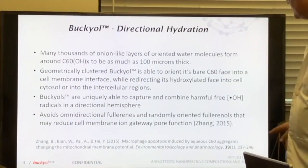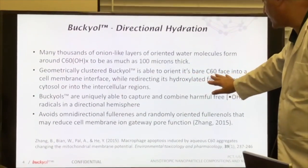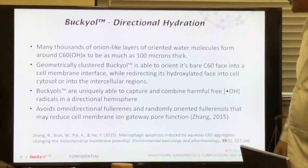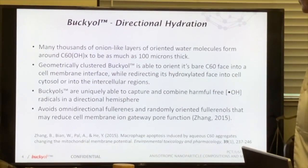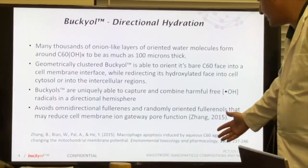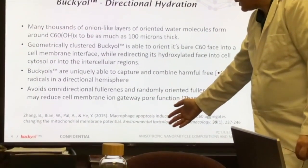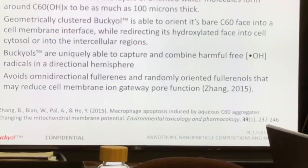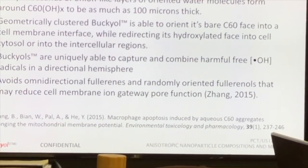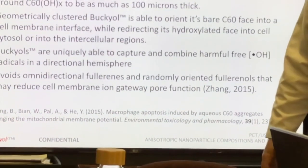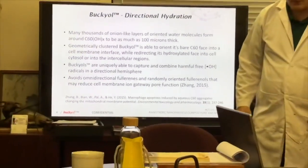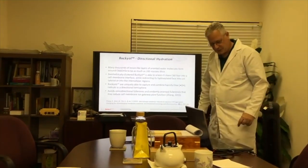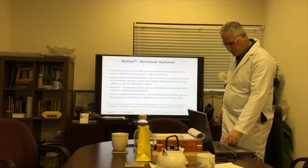We've already talked about the orientation ability of the C60 face onto the lipids. Here is a macrophage apoptosis that C60 has been known to trigger right at the mitochondrial membrane. We can stop viral infections as well because we essentially split them open.